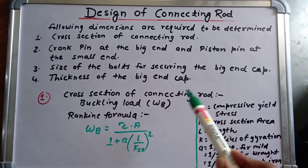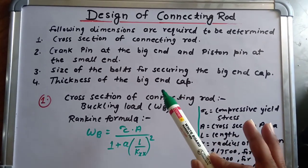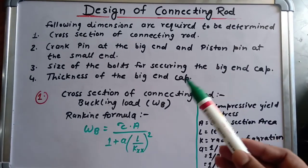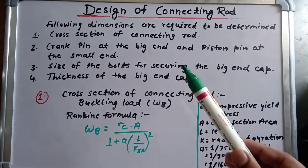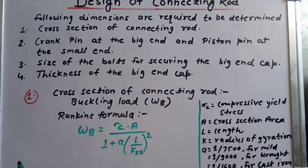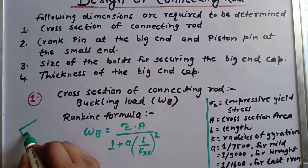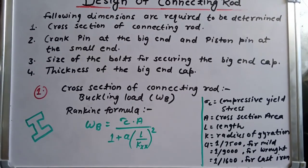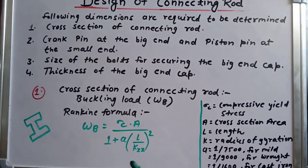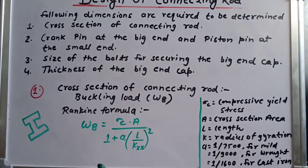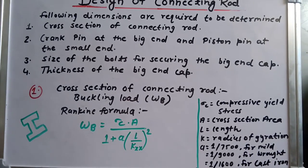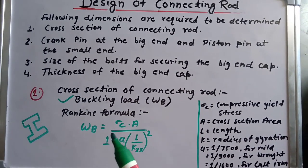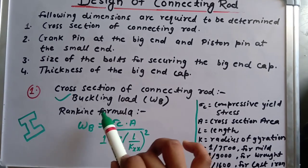The cross section of the connecting rod may be rectangular, circular, or I-section. Here we will use the I-section type. In designing the cross section of the connecting rod, the most important thing to determine is the buckling load.